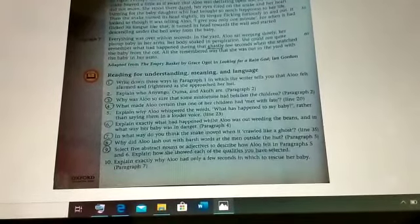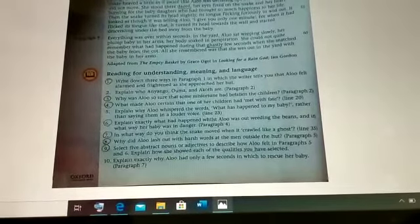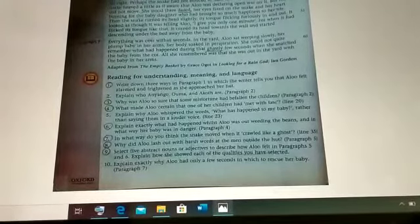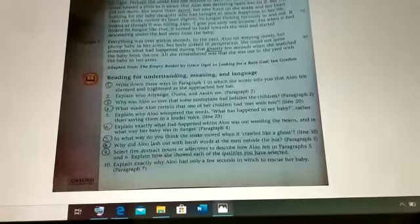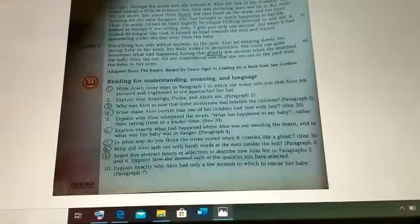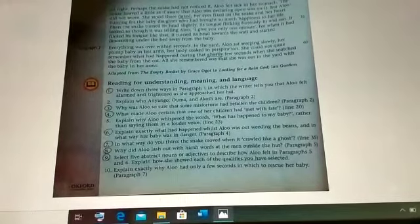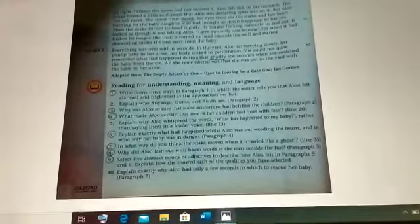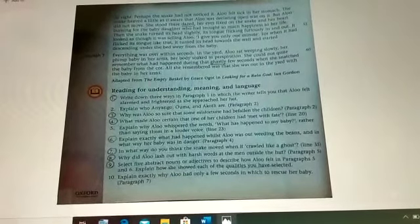Explain who Anango, Yuma and Agatha are. Just the relation of the characters with each other. These two are explicit meaning questions and they have only one, one mark for each if we mark them. Why was Alu so sure that some misfortune had befallen the children? Now there are some questions which have clues of both type. Explicit also and implicit also.